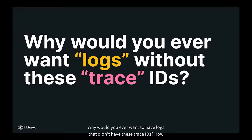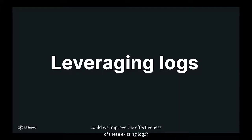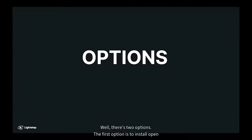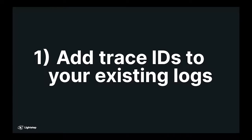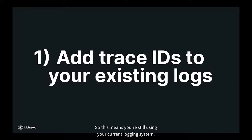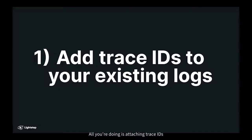If you think about it, why would you ever want to have logs that didn't have these trace IDs? The first option to improve your existing logs is to install OpenTelemetry and use it to add trace IDs to your existing logs. This means you're still using your current logging system — you haven't changed where you're looking at the data or how you're analyzing it. All you're doing is attaching trace IDs to these logs on their way to your existing backend.